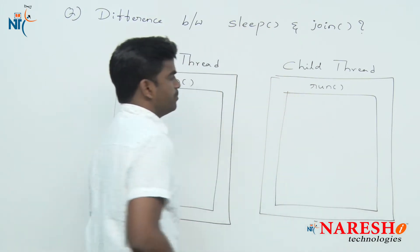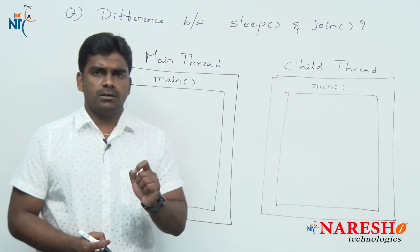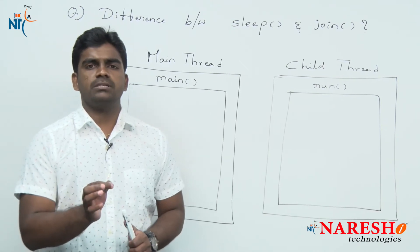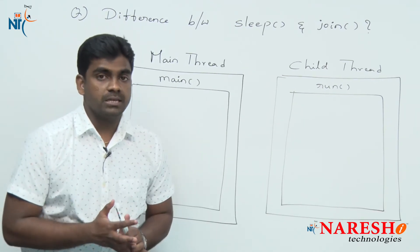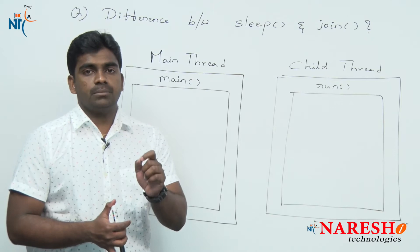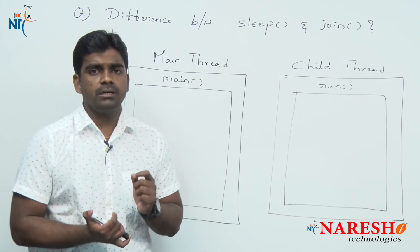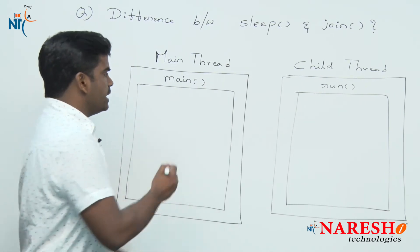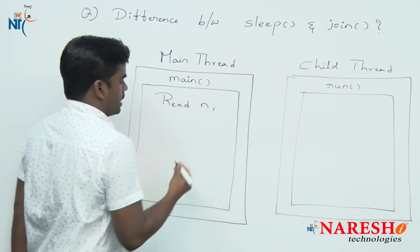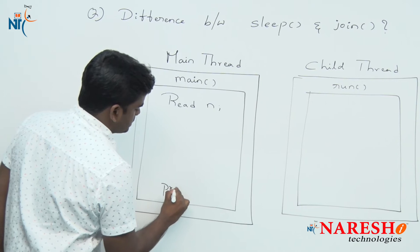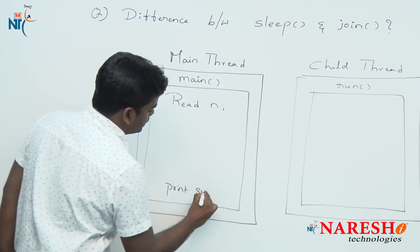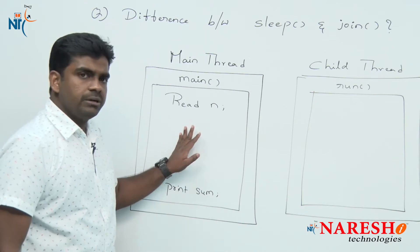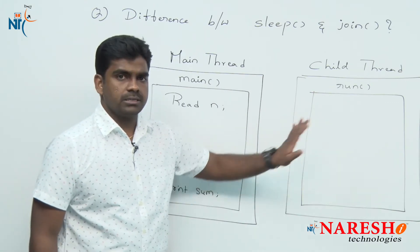Why two threads? My requirement is a simple logical program — sum of first N numbers — and I want to find it out. My intention is I just want to read the N value, and after finding the sum, I want to print the sum value in the main thread. Consider it as a foreground thread and a background thread.